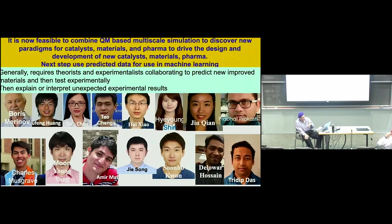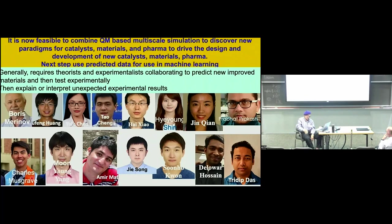Beyond about a million to three million atoms, we need to transfer over to coarse-grain methods. We're not working too much on those yet — we'll get to those in about five years. The next level up, instead of having atoms as entities, we have groups of five to ten atoms, and that allows you to get to time scales from microseconds to maybe ten microseconds. And beyond that level, we go to the continuum. So there's a hierarchy from quantum mechanics, through reactive force fields which are still atomistic, to coarse grain, and then to continuum.